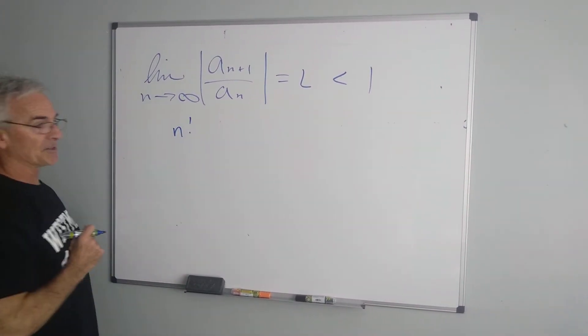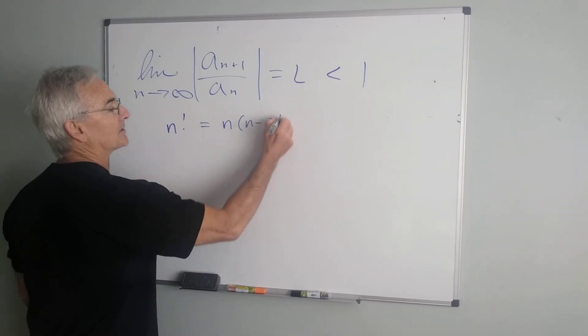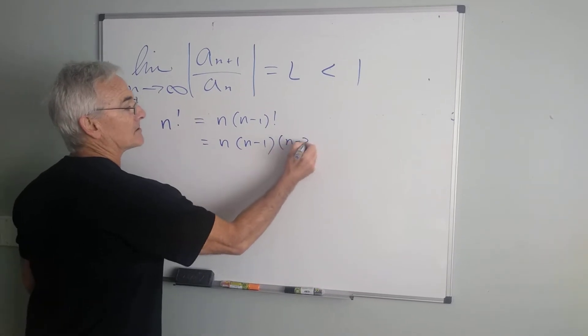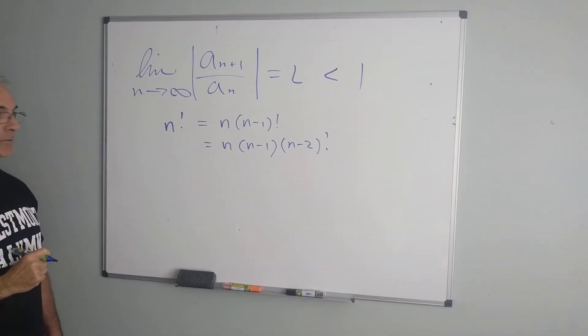if I said I want to expand n factorial, we know that's equal to n times n minus 1 factorial, which would be n times n minus 1 times n minus 2 factorial. We can keep going all the way until we get to 1.